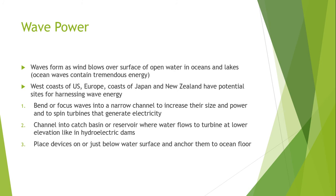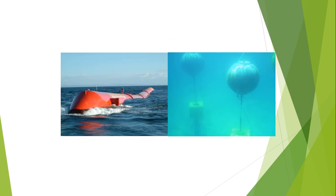The second method is to channel waves into a catch basin or reservoir where water flows to a turbine at a lower elevation — similar in principle to a hydroelectric dam but on a small scale. The third method is to place a device on or just below the water surface and anchor it to the ocean floor. An example of this is a floating device anchored using anchors in the seabed.